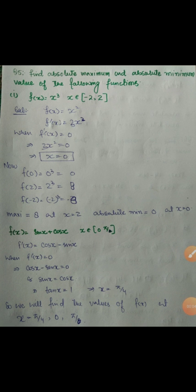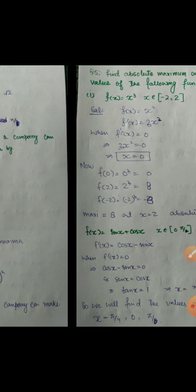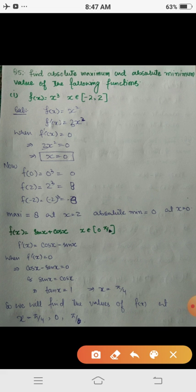Assalamu alaikum dear students. Today we are going to discuss how to find the absolute maximum and the absolute minimum of given functions. The first part is: find the absolute maximum and minimum of f(x) = x³ on the closed interval [-2, 2].